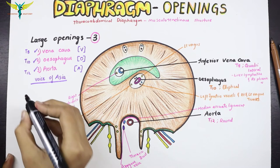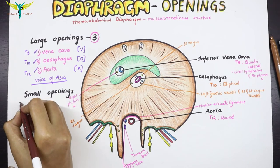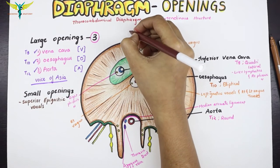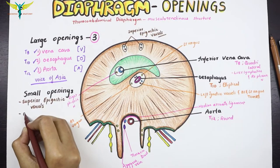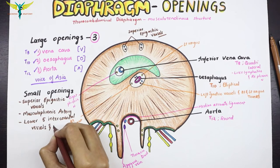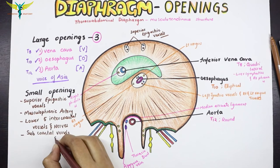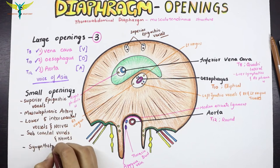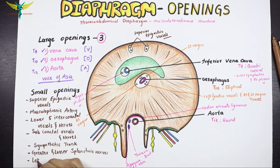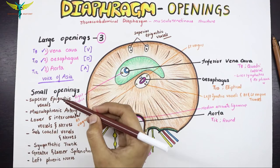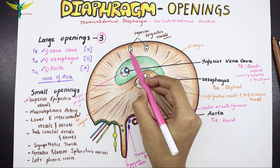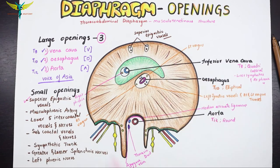Now coming to the small openings of the diaphragm — there are several small openings for structures including the superior epigastric vessels, the musculophrenic artery, the lower five intercostal vessels and nerves, subcostal vessels and nerves, the sympathetic trunk, the greater and lesser splanchnic nerves, and the left phrenic nerve. The openings for the superior epigastric vessels are shown here.